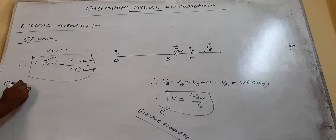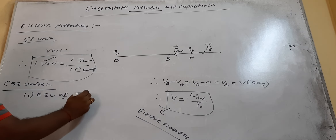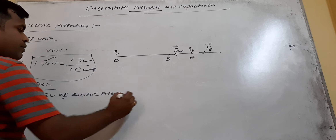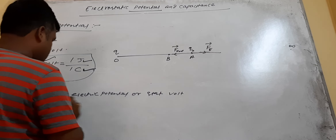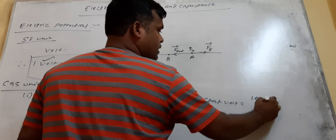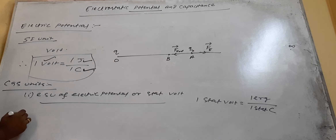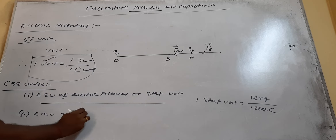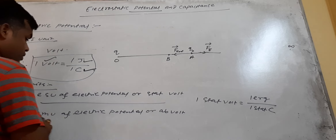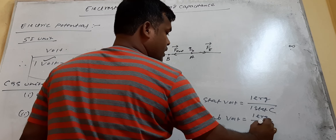In CGS units, there are two units. One is the ESU of electric potential, also called the statvolt. One statvolt equals the corresponding CGS unit of work divided by one statcoulomb. Similarly, the EMU of electric potential is the abvolt. One abvolt equals one erg divided by one abcoulomb.